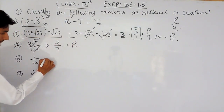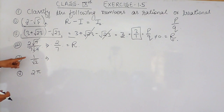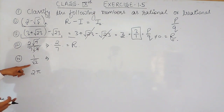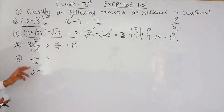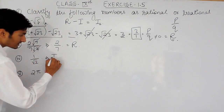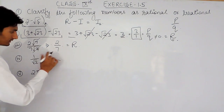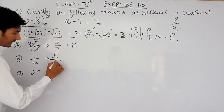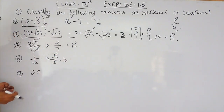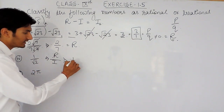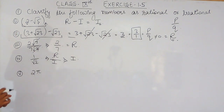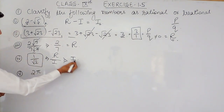For the fourth part, 1 is a rational number, but √2 is an irrational number because its value is non-terminating and non-repeating. There is another property: whenever a rational number is divided by an irrational number, the result is irrational. So this complete expression, 1 divided by √2, is an irrational number.